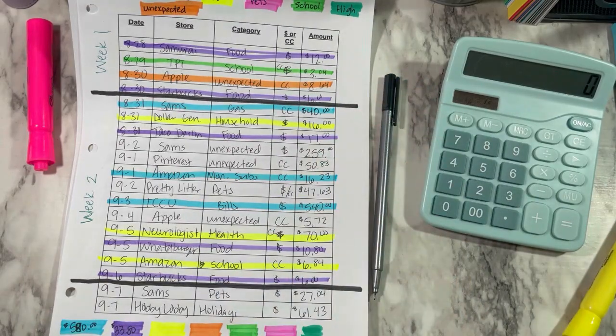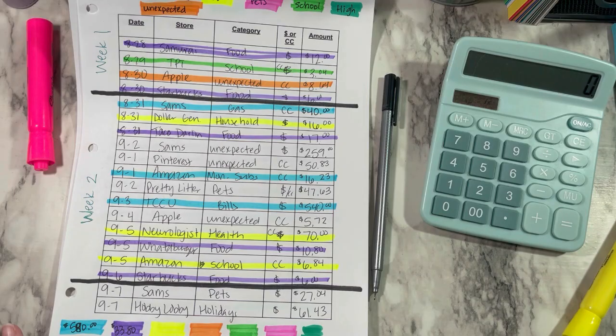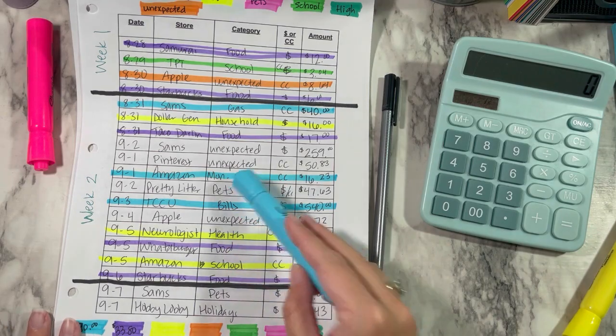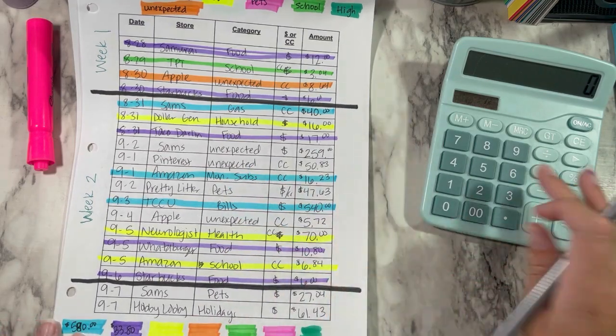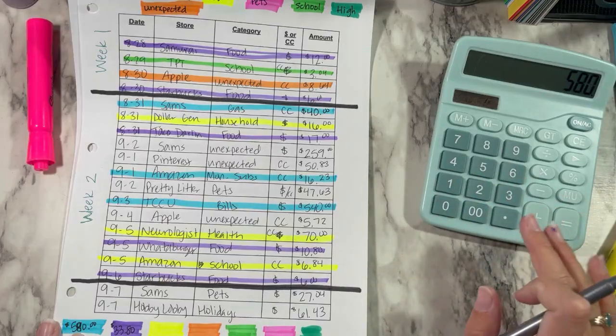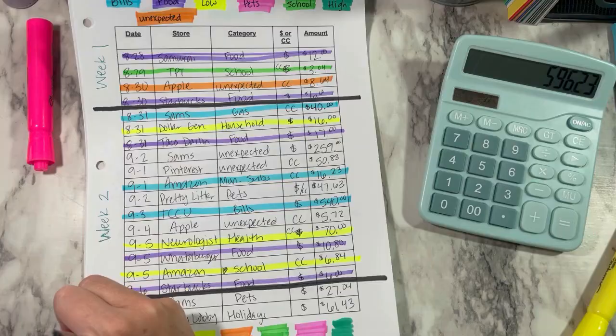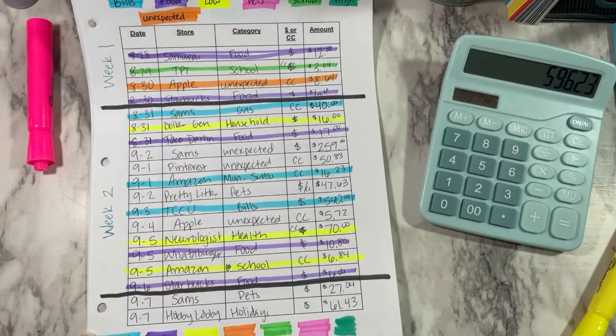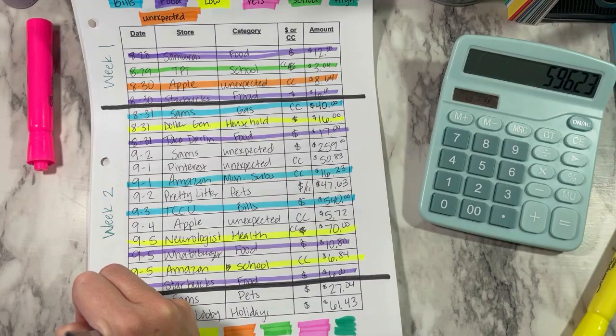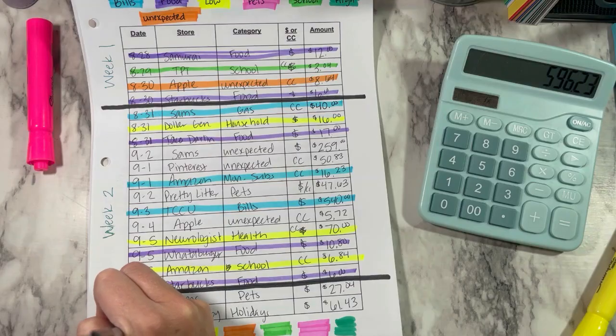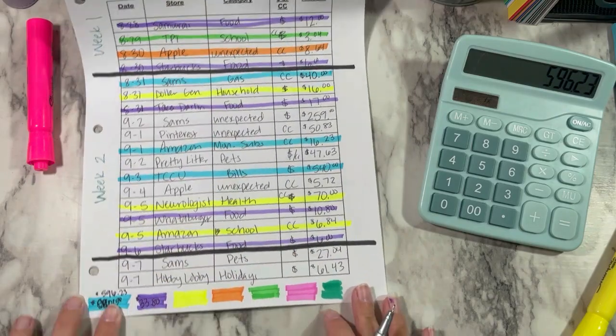So I'm already not off to a great start here. So monthly subs, but it's my Amazon. Let me just make sure I don't have any other. Okay, so $580 plus $16.23. So that's actually, we're just gonna make it all sloppy here. That is actually $596.23.